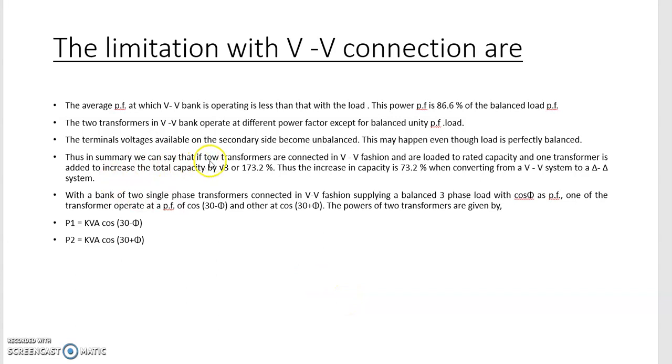Thus, in summary, we can say that if two transformers are connected in V-V fashion and are loaded to rated capacity, one transformer is added to increase the total capacity by root three times. Thus, increase in capacity is 73.2 percent when converting from V-V to delta-delta system.